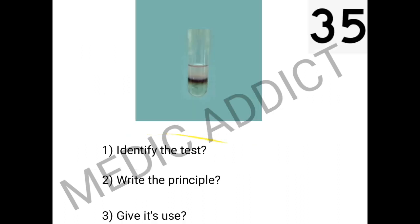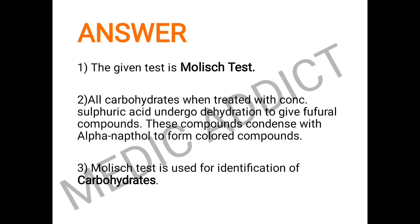The principle of the Molisch test is that all carbohydrates, when treated with concentrated sulfuric acid, undergo a dehydration reaction to give furfural compounds. These furfural compounds condense with alpha-naphthol to form a colored compound. The clinical significance is that the Molisch test is used for the identification of carbohydrates, as it is specific only for carbohydrates.